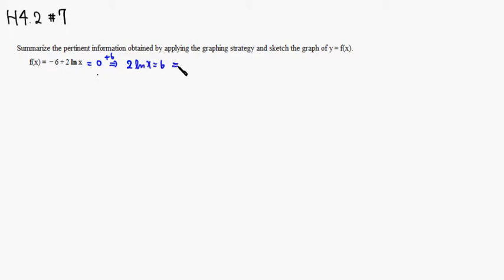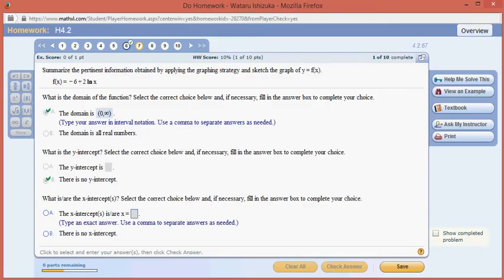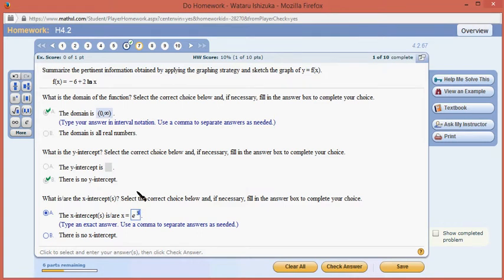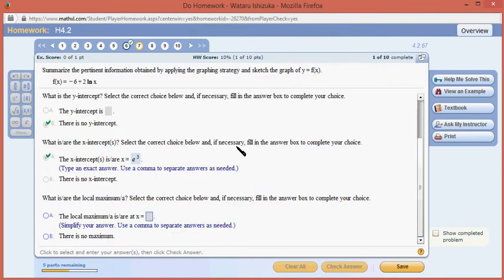Then we can divide through by 2, so natural log of x is equal to 3. Then we raise e to both sides — e to the natural log of x is x, and on the right side we have e cubed. So the x-intercept is e cubed. Check the answer — we got that.